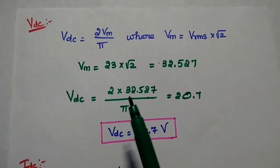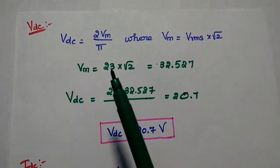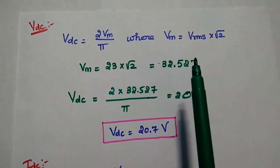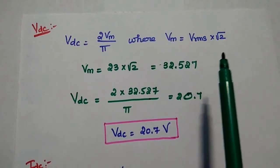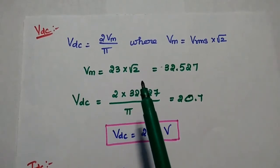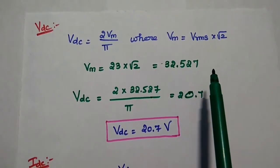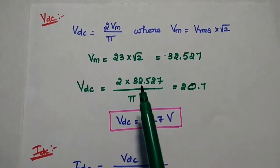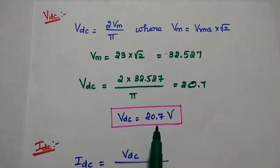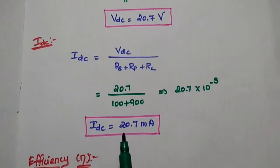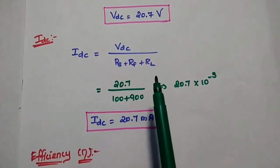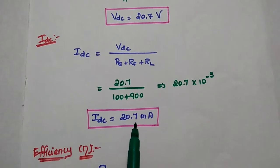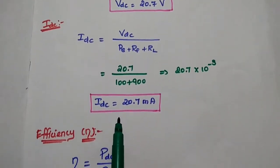Next we find the DC values. The DC voltage equals 2Vm/π. Here Vm is not directly given, so we calculate it as Vrms × √2 = 23 × √2 = 32.527 V. Substituting into the formula: Vdc = 2 × 32.527 ÷ π = 20.7 V. Then Idc = Vdc ÷ (RL + RS + RD) = 20.7 ÷ 1000 = 20.7 milliamps.